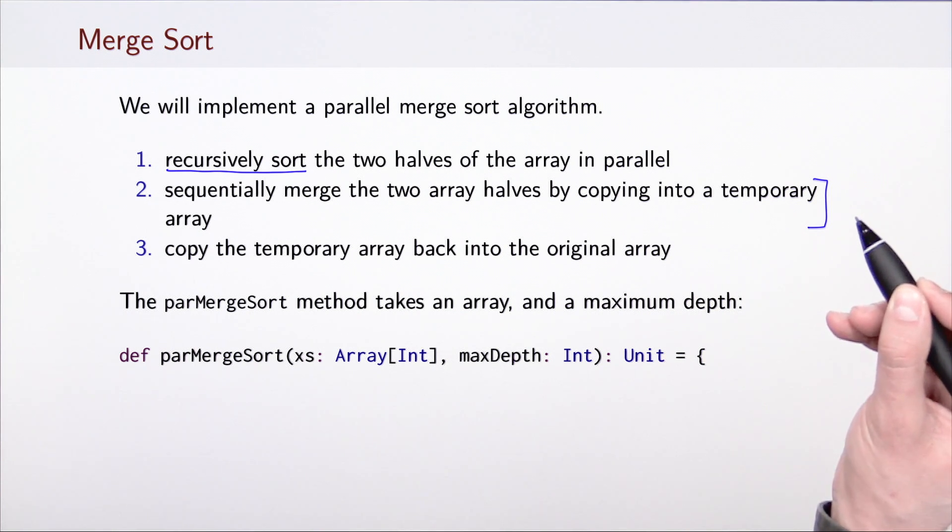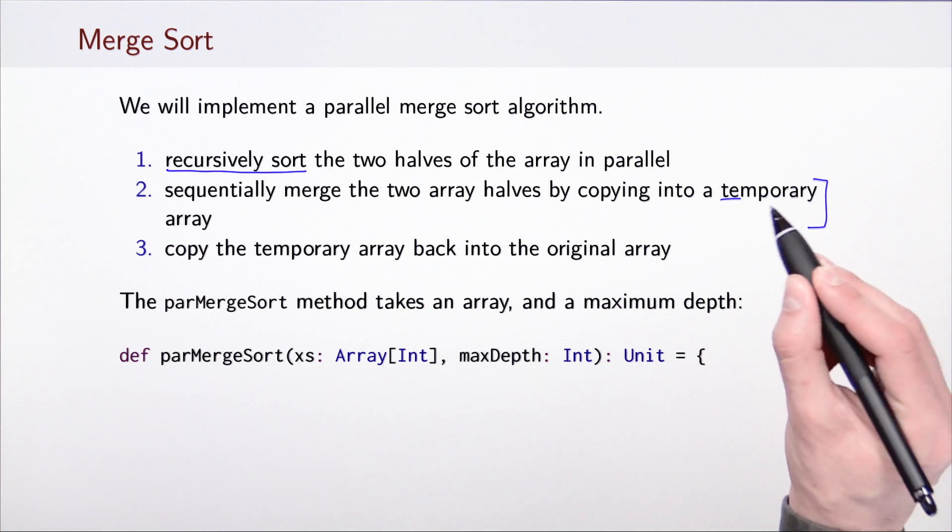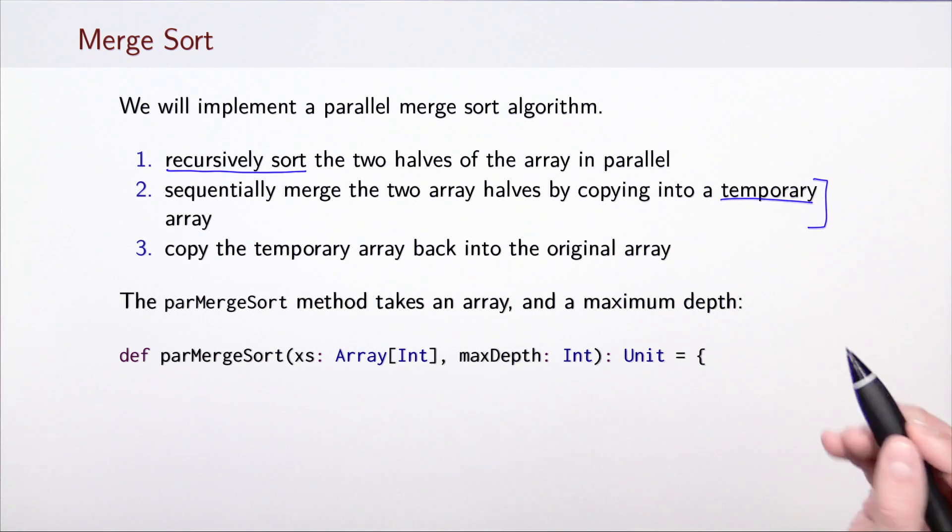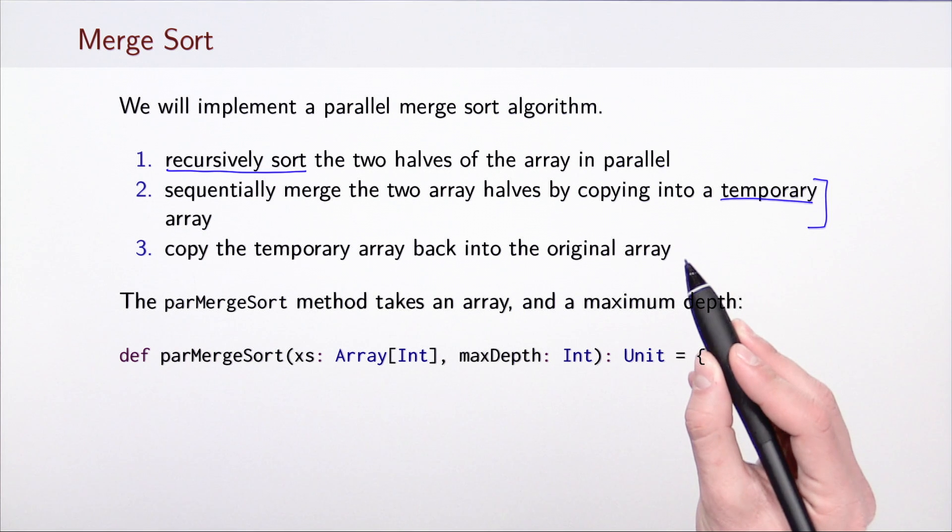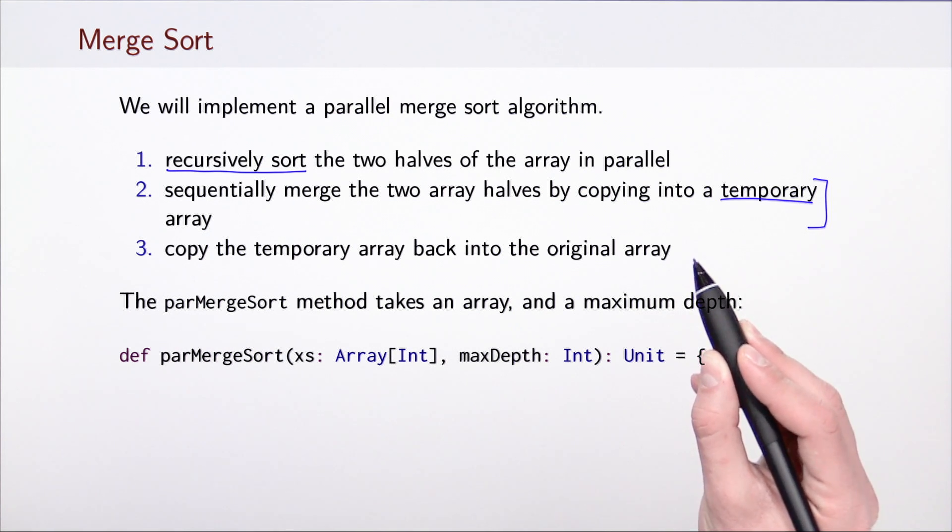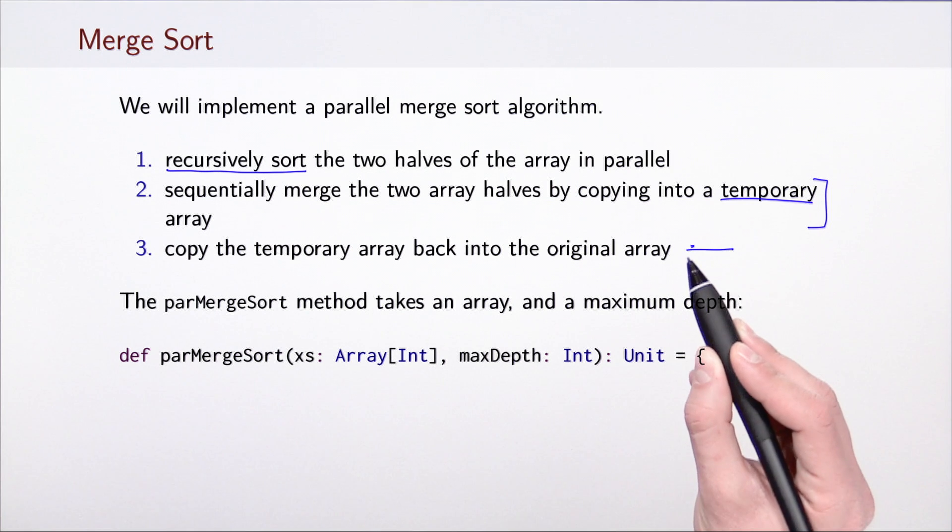For that we have used a temporary array. And finally we have seen a simple parallel copy operation on arrays that allows us to copy the temporary array back into the original array. Together this gives us our parallel merge sort operation and we have seen that it can in fact achieve speedups in practice.